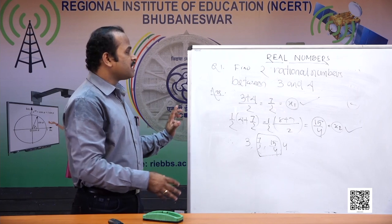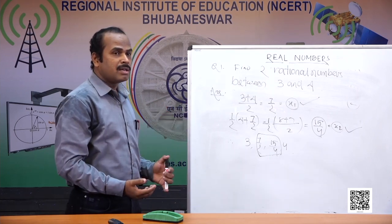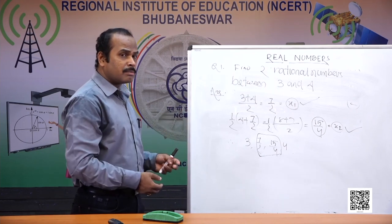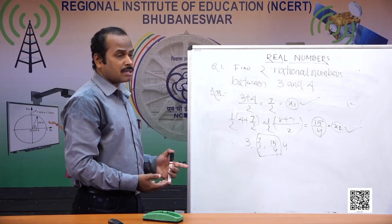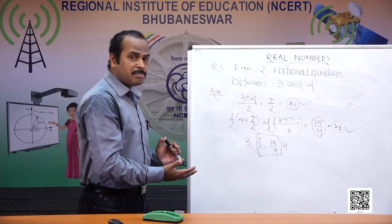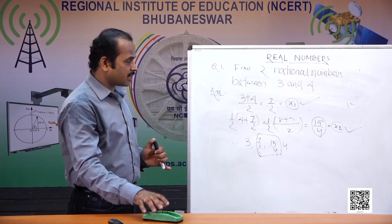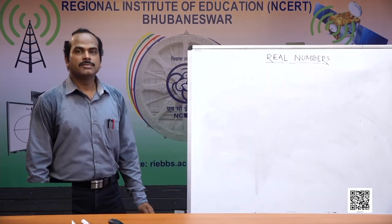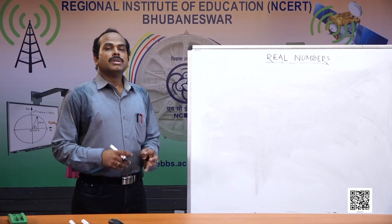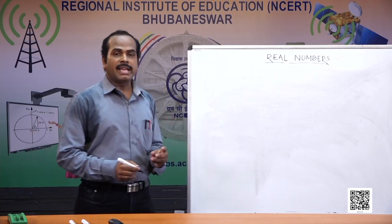We can find two, three, or infinitely many rational numbers between two given rational numbers. But if we are asked to find 50 rational numbers between two given rational numbers, using the (a plus b) by 2 method would take a very long time. Let us use another method for that.